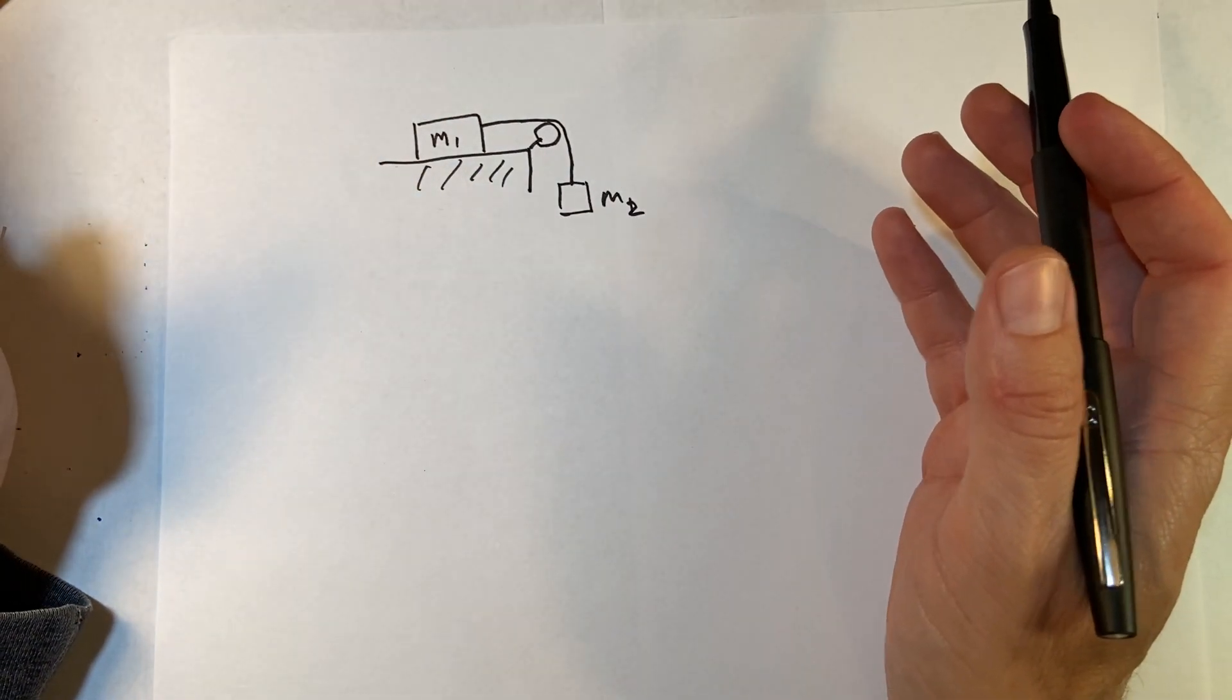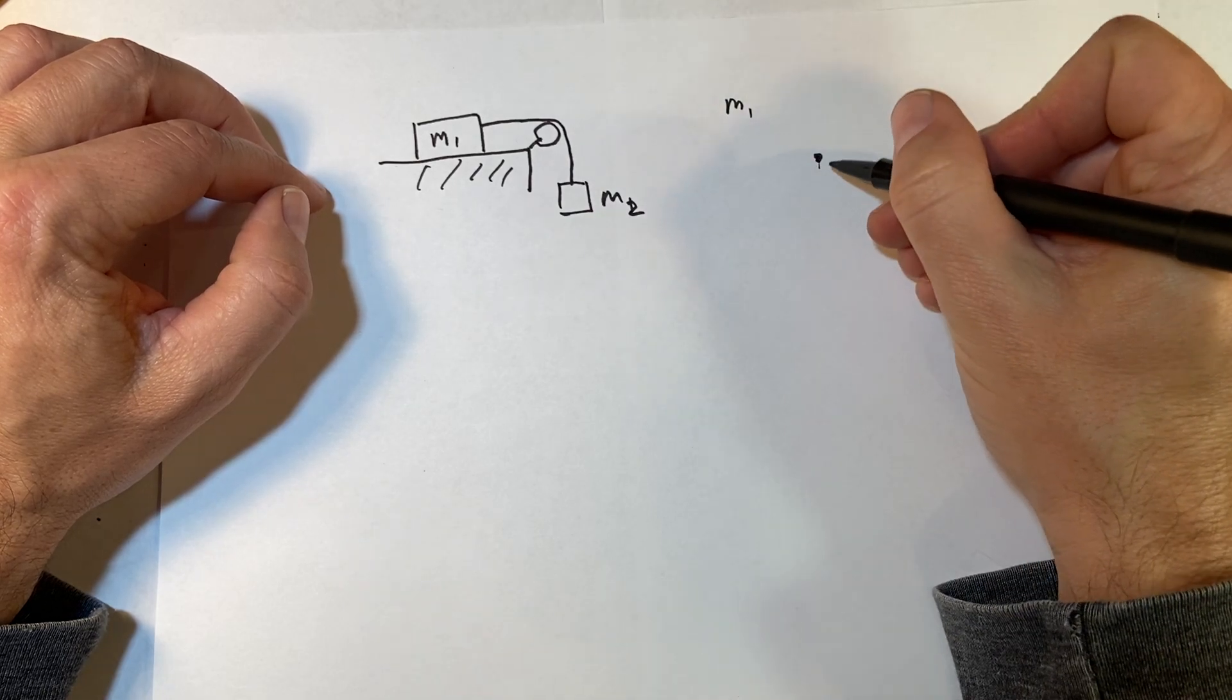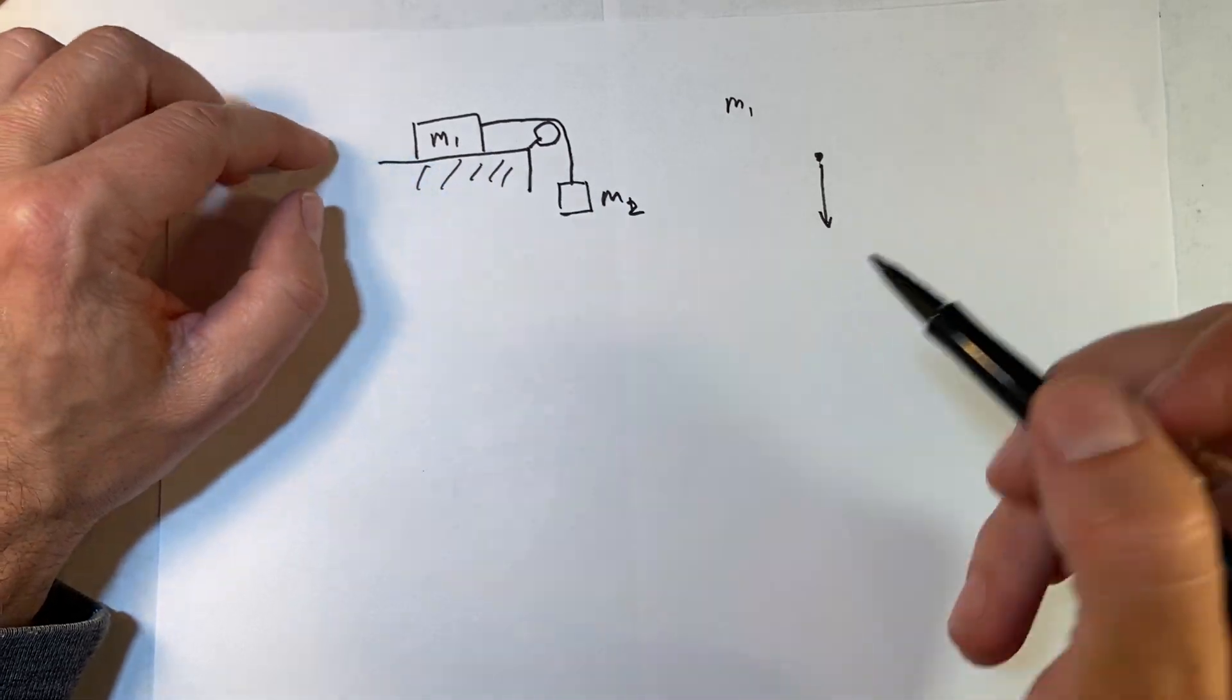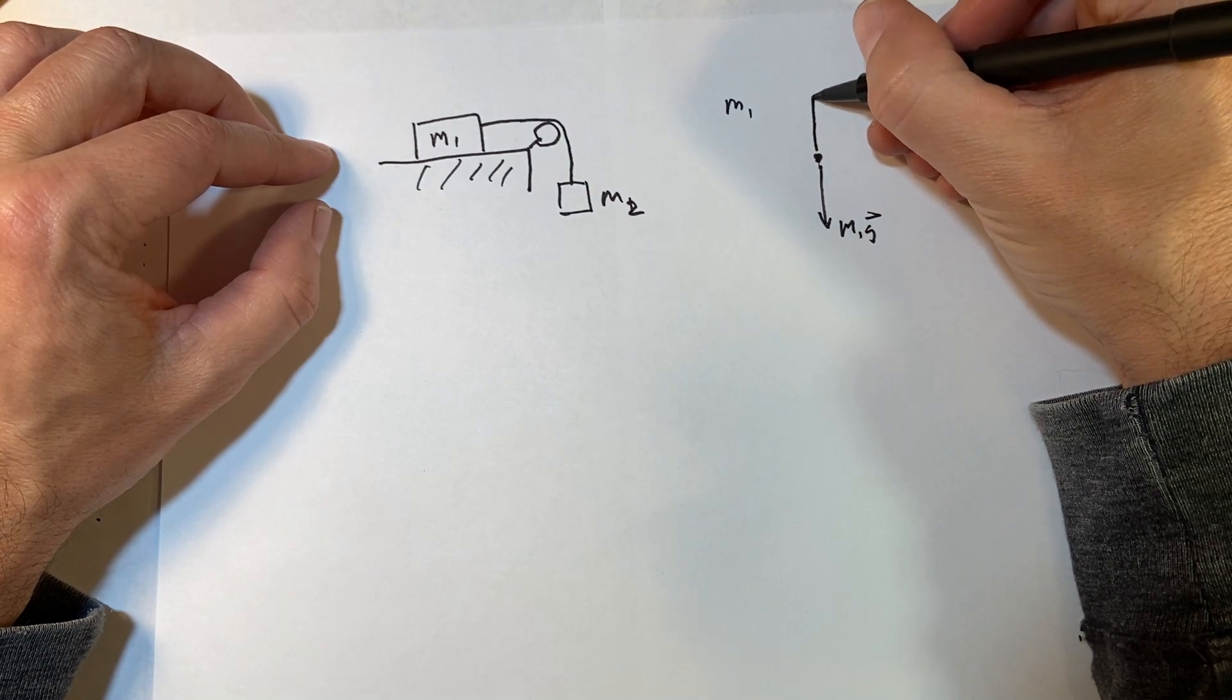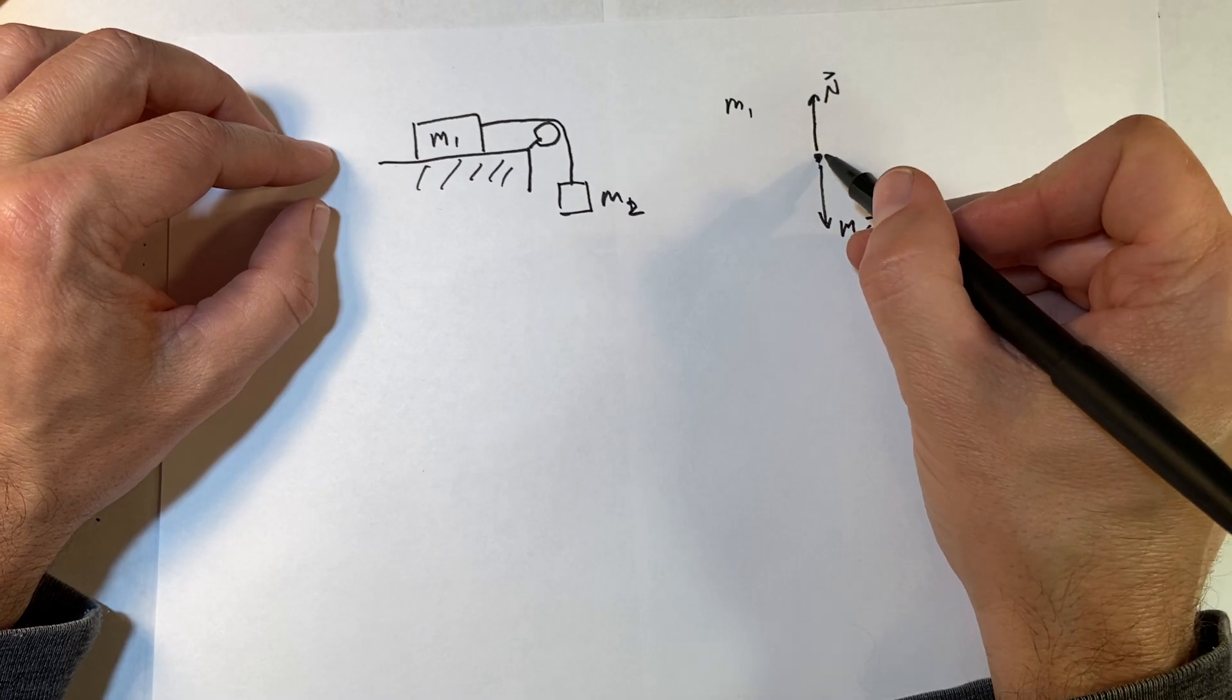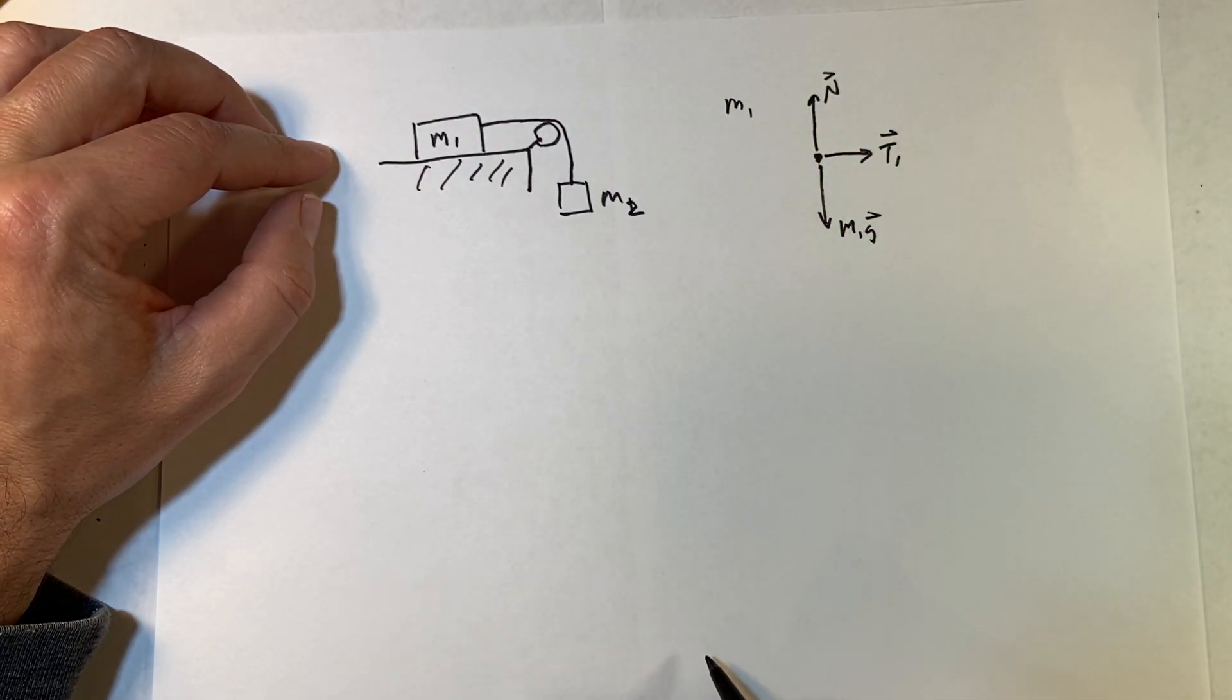So again, we need to draw free body diagrams. Let's start with mass 1. I have the gravitational force, it doesn't really matter which one's greater, but let's just say mass 1 is greater. It's going to be m1g. That's the gravitational force. There's a normal force, n, and then there is a tension in the string pulling this way. I'll call that t1. That's it.